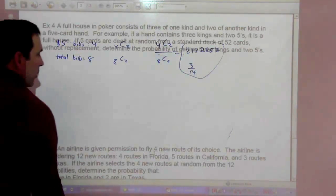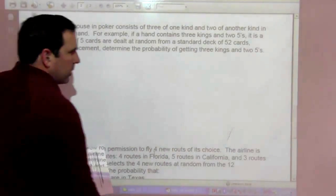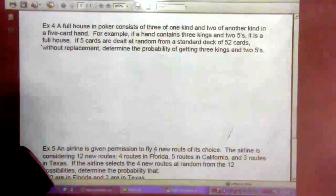I'm not a big poker player. A full house in poker consists of 3 of one kind and 2 of another kind in a 5 card hand. For example, if the hand contains 3 kings and 2 fives, it is a full house. If 5 cards are dealt at random from a standard deck of 52 cards without replacement, determine the probability of getting 3 kings and 2 fives.